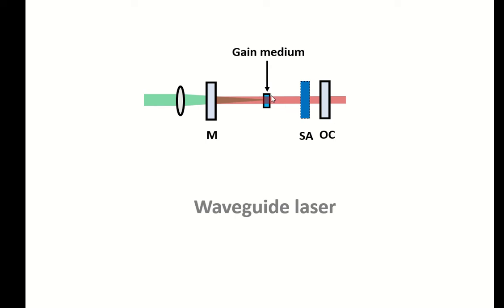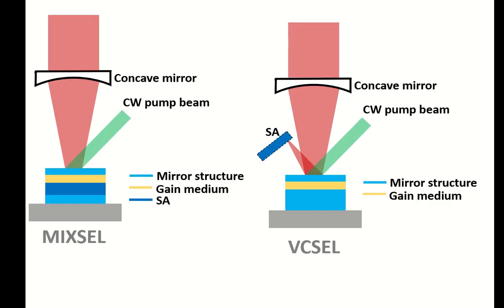Since in this kind of laser the cavity length is very very short, the two types of lasers that have become very common nowadays are MIXSEL and VCSEL. In MIXSEL you make the cavity length extremely short, you pump the laser beam and you have a gain material inside the chip. The chip lases and the saturable absorber also is within the chip.